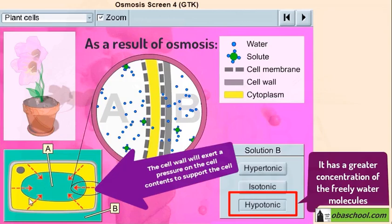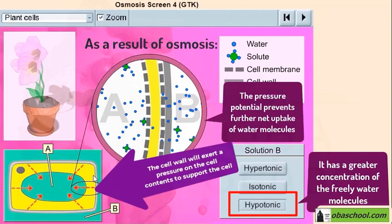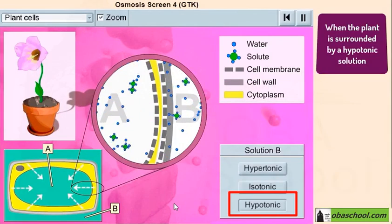So we can conclude that the pressure potential prevents further net uptake of water molecules. Usually, when the plant is surrounded by a hypotonic solution, there is a net movement of water molecules into the cell by osmosis.